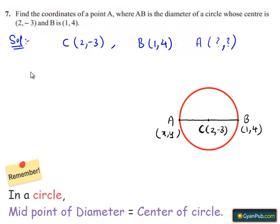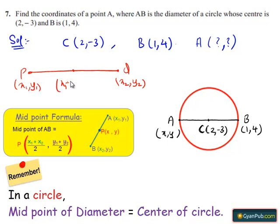We know that the midpoint of the line joining the two points P and Q is given by (x₁+x₂)/2, (y₁+y₂)/2.